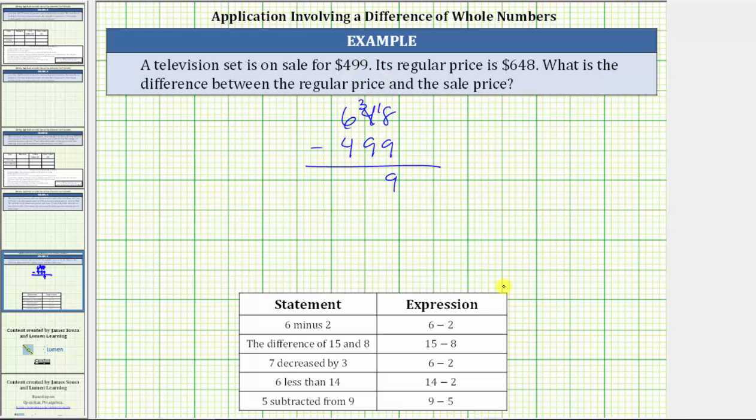In the tens place value, we cannot subtract 9 from 3. We need to perform an exchange with the 6 in the hundreds. We change the 6 to a 5, which will give us 13 in the tens place value. 13 minus 9 is 4.